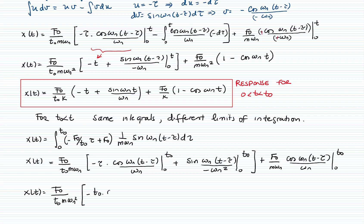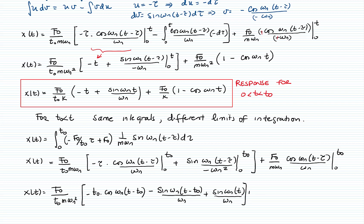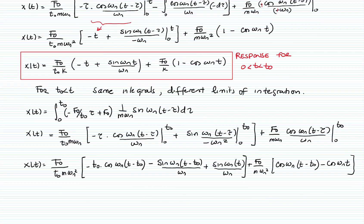The first term gives t₀ · cos(ωₙ(t − t₀)), with the τ = 0 term vanishing. The second evaluation gives sin(ωₙ(t − t₀)) minus sin(ωₙ t). The last term gives f₀ / (m·ωₙ) times [cos(ωₙ(t − t₀)) − cos(ωₙ t)]. This is the response; let's simplify with a bit of algebra.